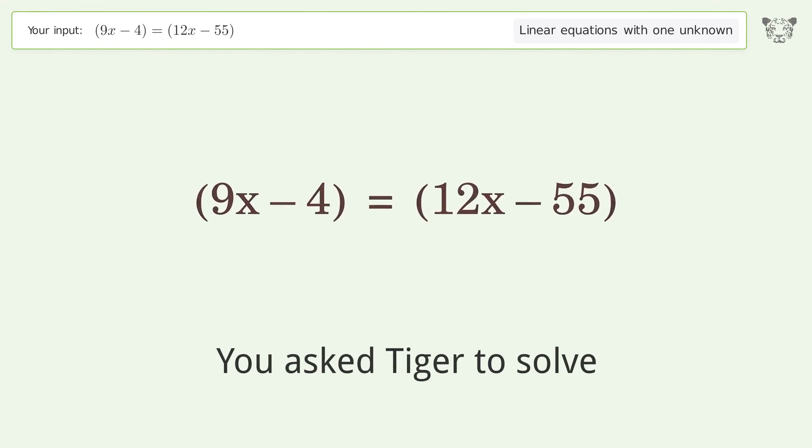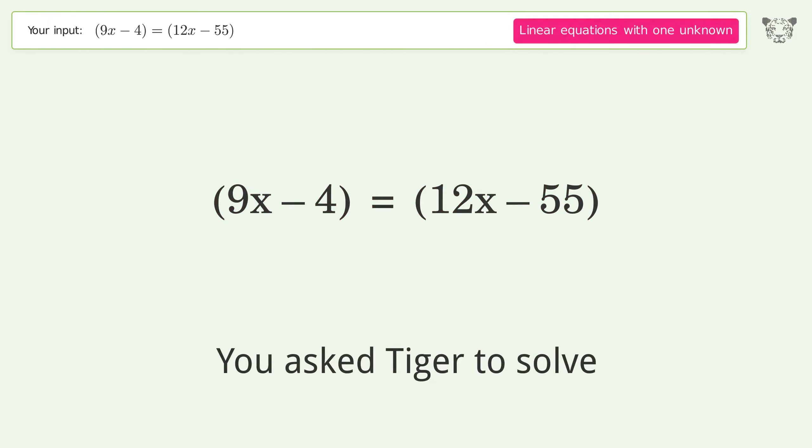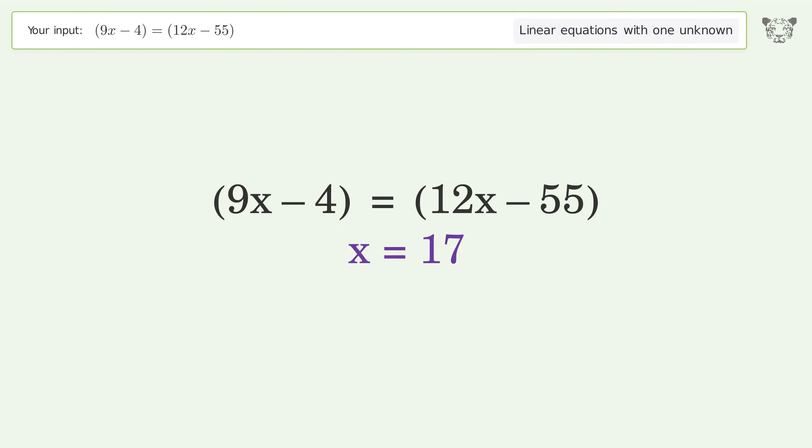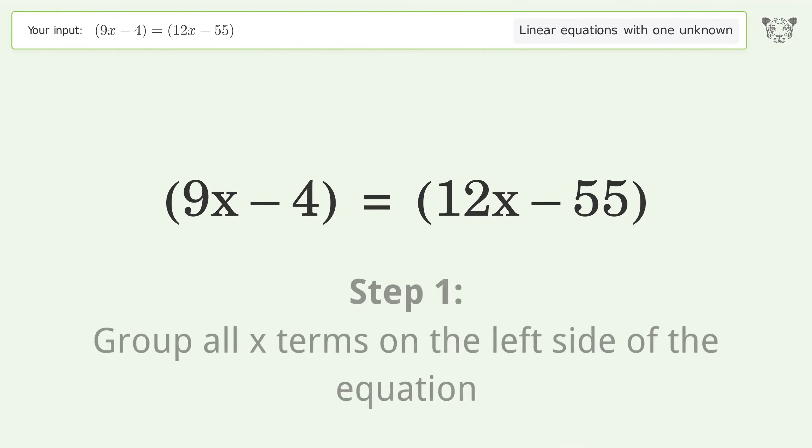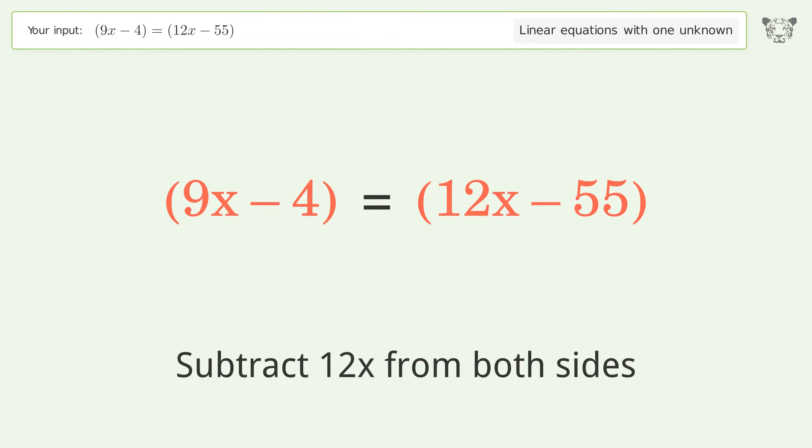You asked Tiger to solve this. This deals with linear equations with one unknown. The final result is x equals 17. Let's solve it step by step. Group all x terms on the left side of the equation. Subtract 12x from both sides.